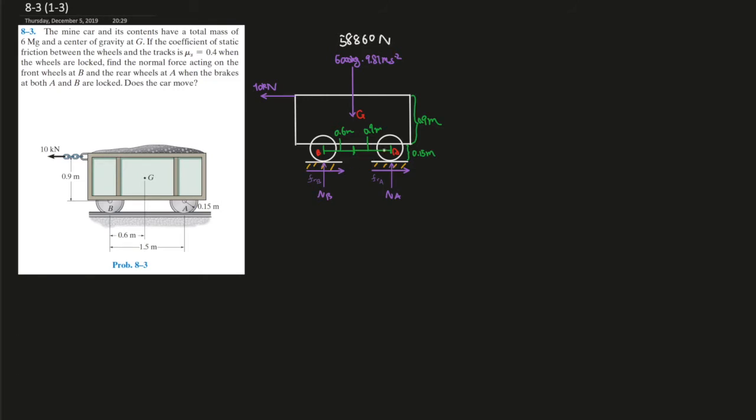All right, so now we can't use the sum of the forces in the x direction or the y direction, right, because there are two unknowns for each, so we have to use moments. Let's just pick sum of the moments at A. Sum of the moments at A equals to 0.